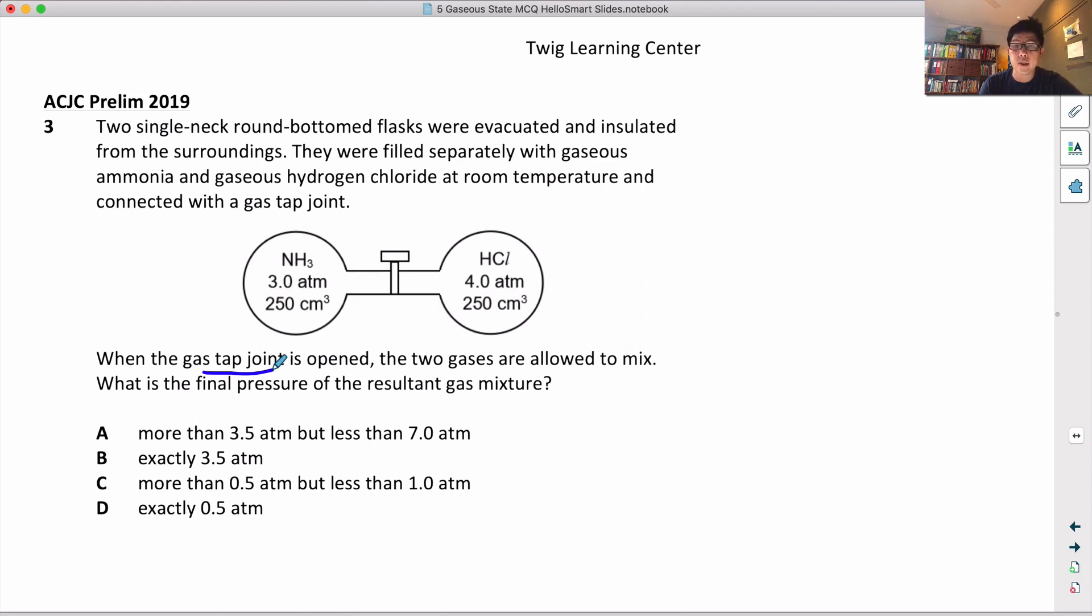This question is a bit tricky. Theoretically, ammonia and HCl are actually not inert - in fact, one is an acid and one is a base, which means ammonia will react with HCl.